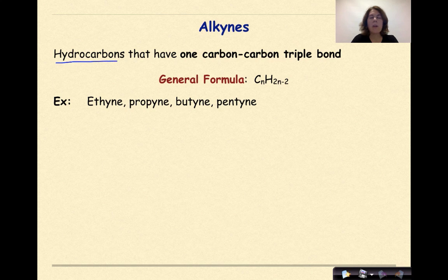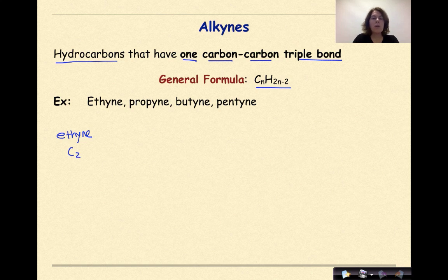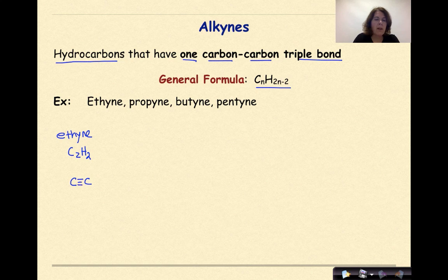Our last group is called the alkynes. These are hydrocarbons — only carbon and hydrogen — that have one carbon-to-carbon triple bond. The general formula is CnH2n-2. We can't have 'methyne' because we need a triple bond between two carbons, so we start with ethyne. 'Eth' means two carbons, so C2H2 — that's 2×2-2=2. I draw two carbons with a triple bond between them, each needing one more bond, so a hydrogen on each end. It looks very symmetrical.